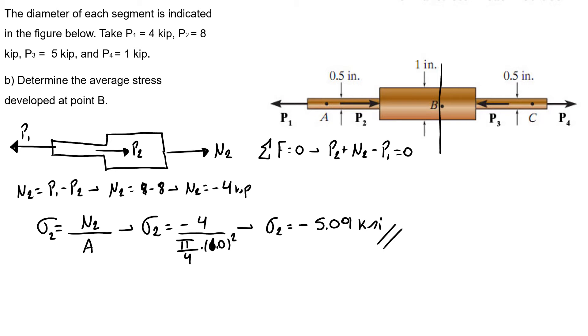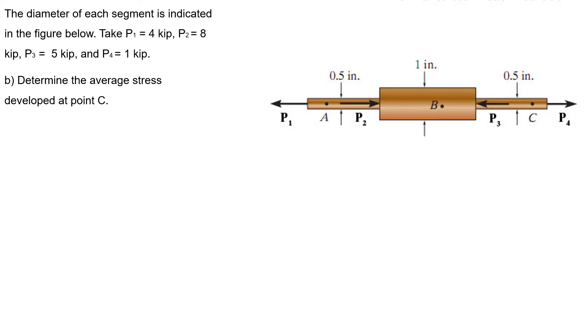Finally, our third stress. I have a section cut here. You can choose the member to the left, or you can choose this member here to the right, which I'll choose because it's easier since I have just one force P4. I have my P4 and here I have my N4. So the sum of the forces equals zero.